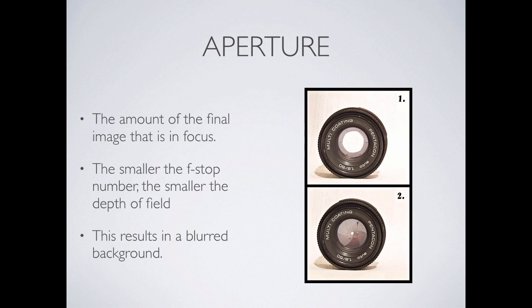Aperture is a circular opening that allows light into your camera. It controls how much light can actually get into that light-proof box and be cast on the sensor. It also controls the amount of the final image that's in focus — we'll talk about depth of field in just a second. The smaller the f-stop number, the smaller the depth of field. F-stop is our way of referring to aperture, and the weird thing is it's an inverse relationship — the opening is actually big when the f-stop number is small. Let me pull out a live example.